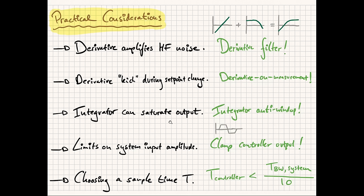A large problem with the integrator term is that it can saturate the output — typically termed integrator windup. To combat this, the imaginatively named integrator anti-windup is used, which is essentially some form of clamping. It's necessary to prevent the integral from reaching excessively large values when the control signal is already at its maximum possible value for an extended period of time. Additionally, the controller output needs to be constrained to maximum and minimum values it can take — for example, in an aircraft the rudder can only deflect by a certain maximum angle, so we simply clamp the controller output.